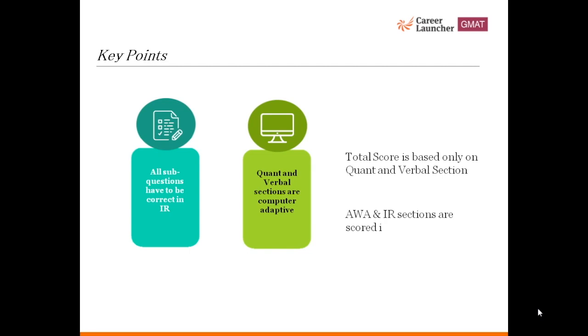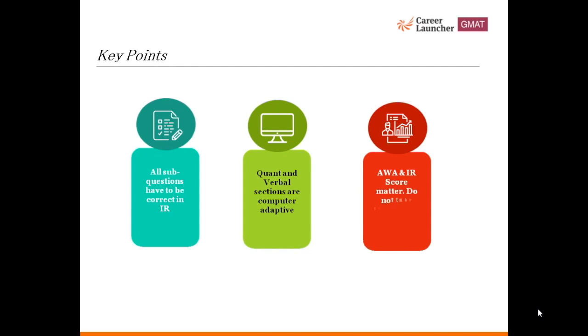AWA and IR section are independent sections and are scored independently. AWA and IR scores matter. One should not take AWA and IR scores lightly as most of the universities look for a minimum score of four or more on these sections.